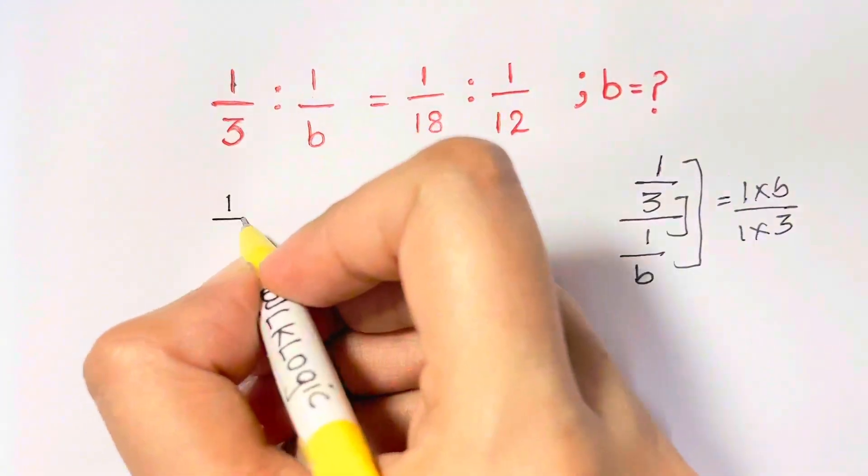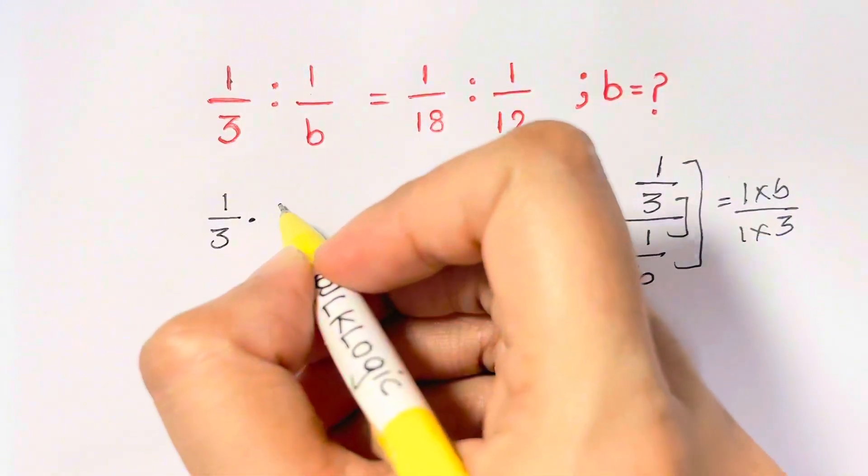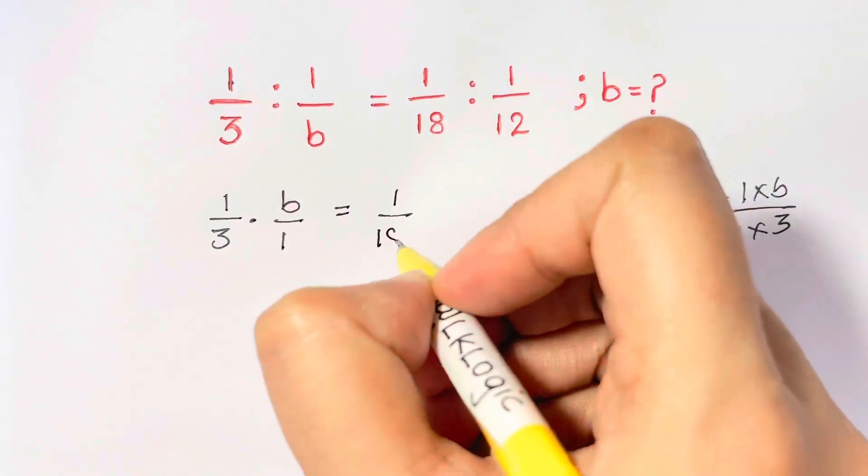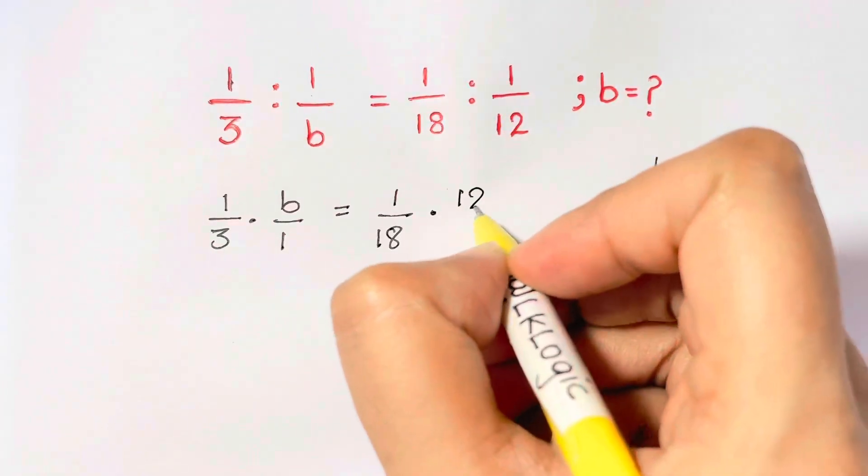So we write it as 1 over 3 times you flip the other fraction, that is B over 1 when it is division. And here also 1 over 18, flip the other fraction, times 12 over 1.